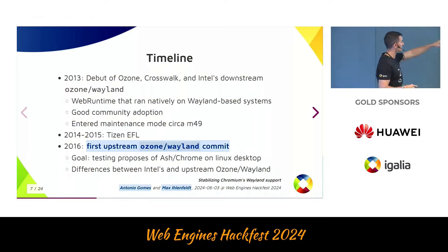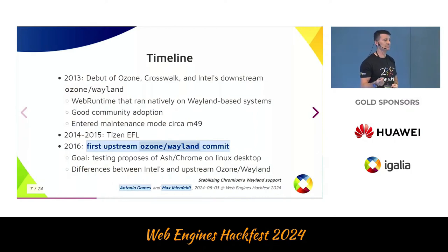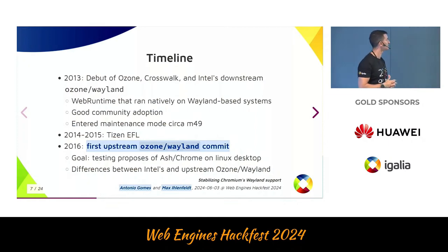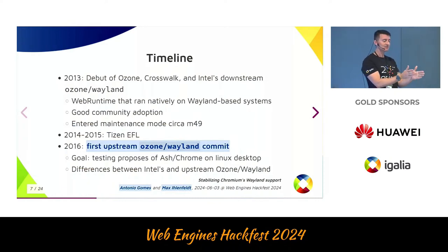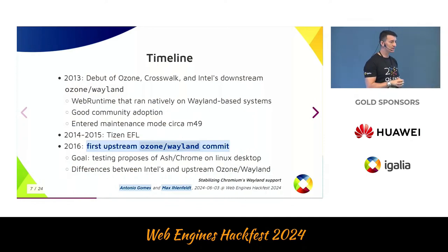To give you an idea, this happened around Milestone 49 of Chromium; today we are on Milestone 125, with 126 stable and 127 as beta and bleeding edge. Meanwhile, alongside Intel and the Tizen folks, we also started to see things happening in tip-of-trunk Chromium. We saw the first commit taking place in Chromium upstream, and at Igalia we built that because we wanted to see where things were.